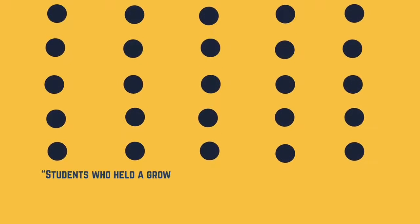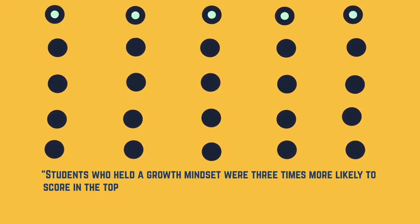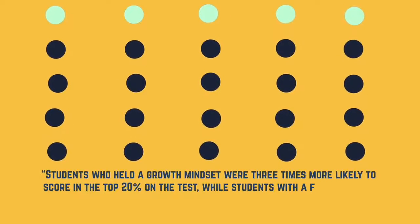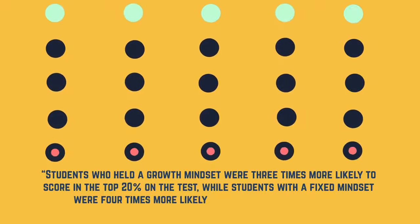For example, a study found that students who held a growth mindset were three times more likely to score in the top 20% on the test, while students with a fixed mindset were four times more likely to score in the bottom 20%.